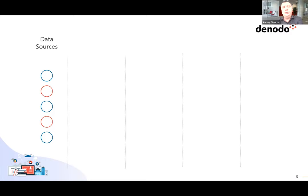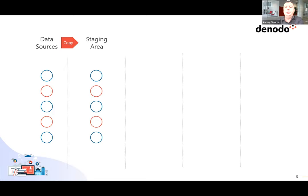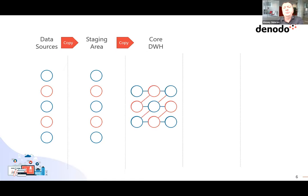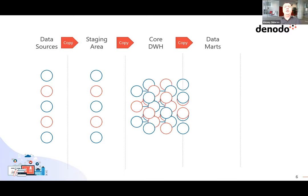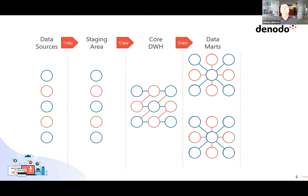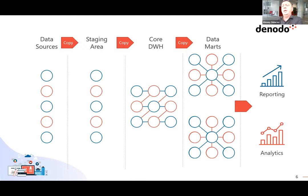We get access to data sources, we extract the data physically, move them to the staging area of the data warehouse, land them in our data lake — physically copying the data, creating a copy of the source data. Then we move those data to the core data warehouse model or to the trusted zone of the data lake. The idea was still the same: move data physically again, over and over — read data, do some things, clean them, prepare them. After that, we had a next step of creating departmental data marts. The financial department had one data mart, marketing had another. But we still made another copy of the data. Only after all those steps could we connect our reporting and analytical tools to the data marts and do our job.